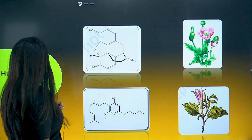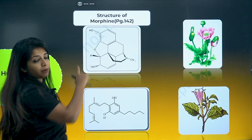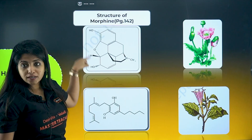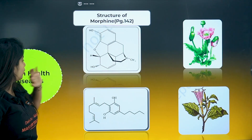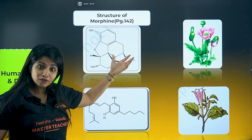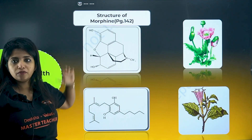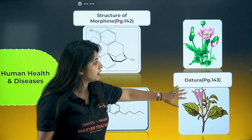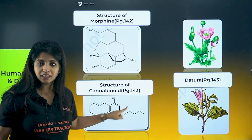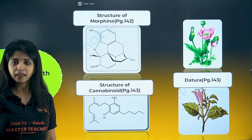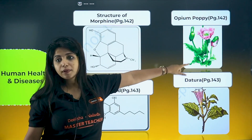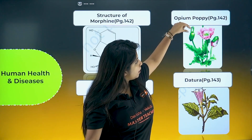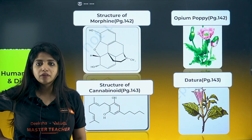This structure — if given — is morphine. You don't have to draw it. Morphine comes under opioids. Its source is Papaver somniferum — the opium poppy — where you get morphine from the latex. This plant is Datura, and its structure is a cannabinoid — where you see step-like structures, that is cannabinoid. All these questions — what is this structure, what is this plant, what is the source — can be asked.